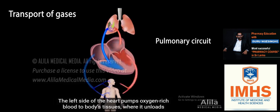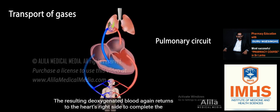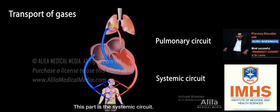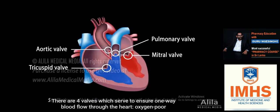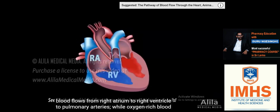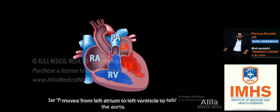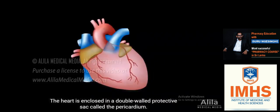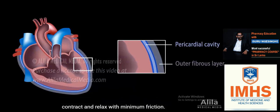The left side of the heart pumps oxygen-rich blood to the body's tissues, where it unloads oxygen and picks up carbon dioxide. The resulting deoxygenated blood returns to the heart's right side to complete the cycle — this part is the systemic circuit. Because the heart's left side has to pump blood to the entire body, it has much thicker muscle than the right side. There are four valves which ensure one-way blood flow through the heart. Oxygen-poor blood flows from right atrium to right ventricle to pulmonary arteries, while oxygen-rich blood moves from left atrium to left ventricle to the aorta. The heart is enclosed in a double-walled protective sac called the pericardium, whose pericardial cavity contains fluid that serves as lubricant and allows the heart to contract and relax with minimum friction.